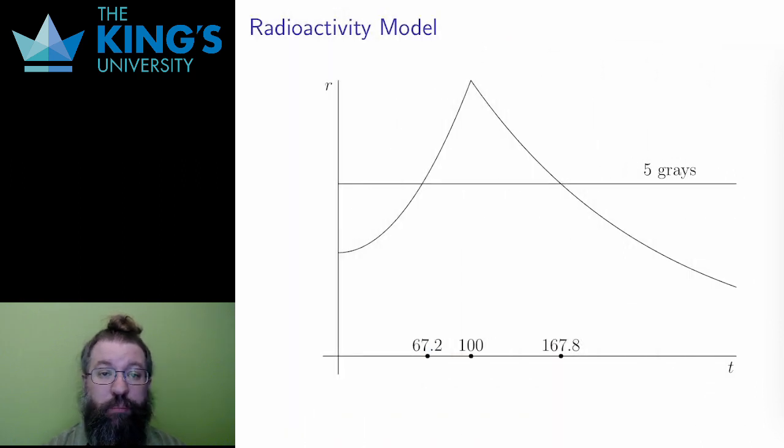Lastly, here is a graph of the model, with a point where it exceeds the dangerous level of 5 grays labeled. Again, this seems like a situation that could happen, a story that is believable.